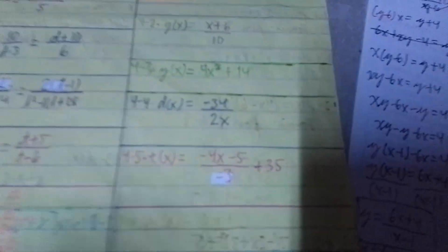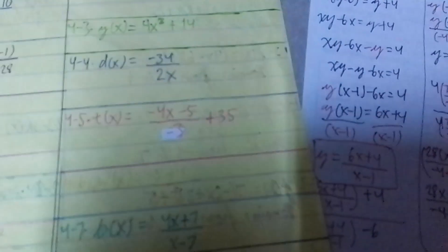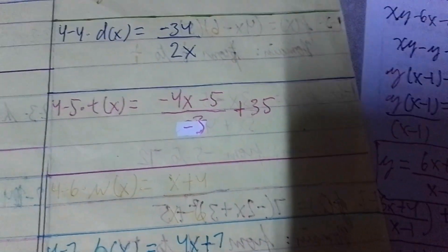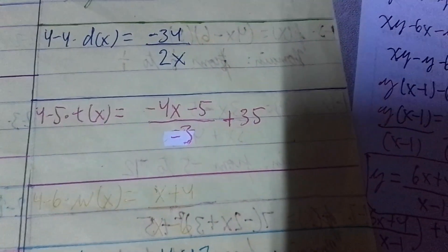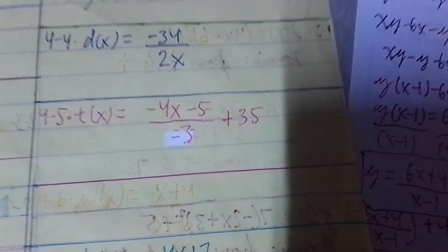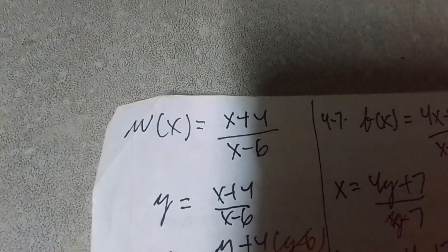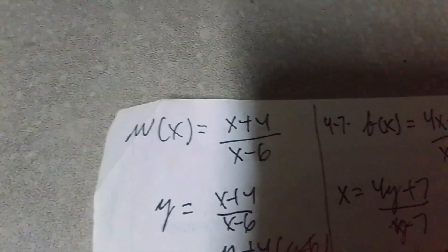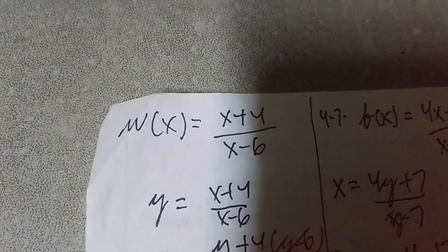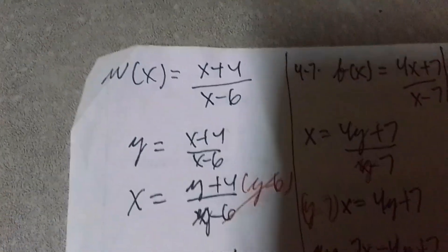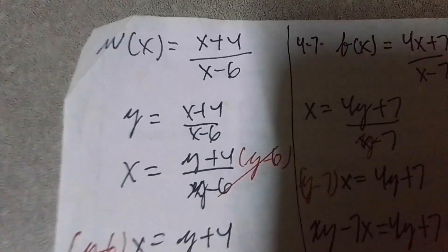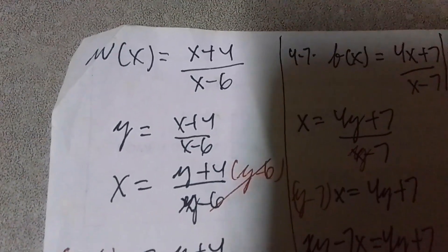So now we're in number 6. So number 6, to find the inverse of the function — the function is W of x is equivalent to x plus 4 divided by x minus 6. Here's the solutions on how I solve. The first thing that you're going to change is the W of x to y, and then interchange it with x.